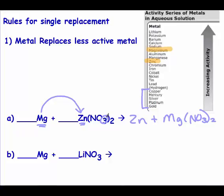For the next one, magnesium is trying to kick out lithium. Look on the activity series and magnesium is below lithium, so magnesium cannot kick out lithium. This will be no reaction. You can place magnesium and lithium nitrate together, but the magnesium is just going to sit there — no reaction will take place.